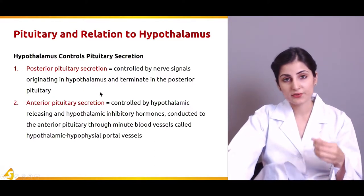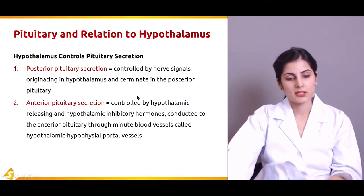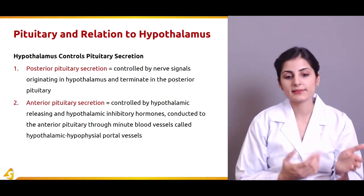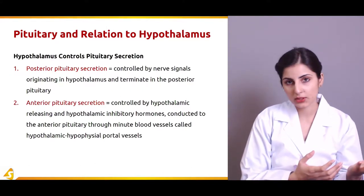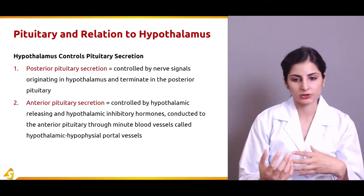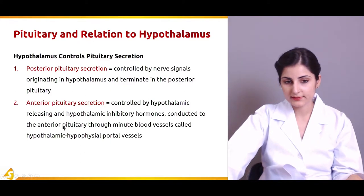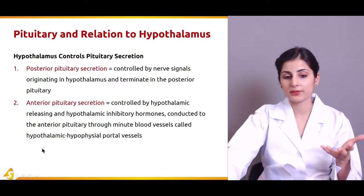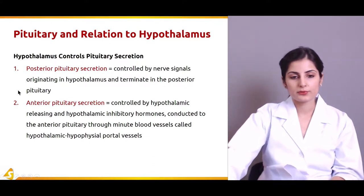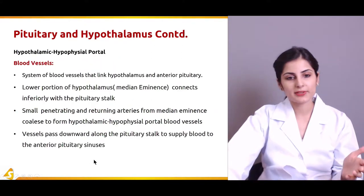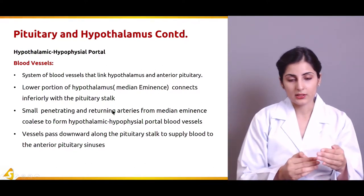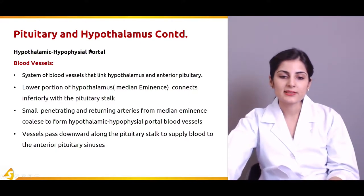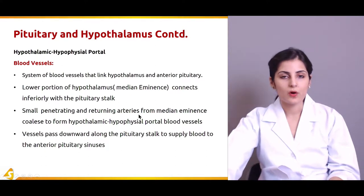These axons carry secretions produced by certain nuclei of the hypothalamus. Anterior pituitary secretion is also controlled by the hypothalamus — the hypothalamus releases inhibitory and releasing hormones which either enhance or inhibit the production of the pituitary. These hormones are conducted to the anterior pituitary through a portal system — a minute blood vessel system known as the hypothalamic-hypophysial portal system.